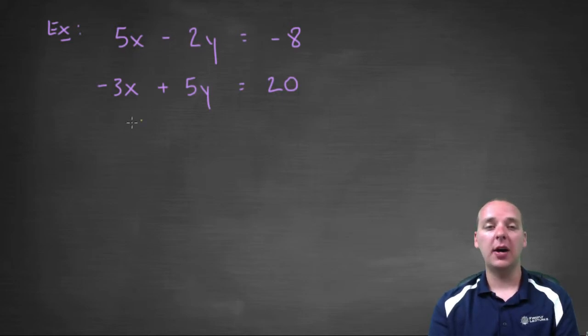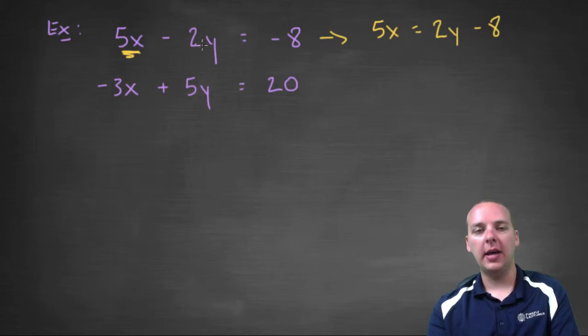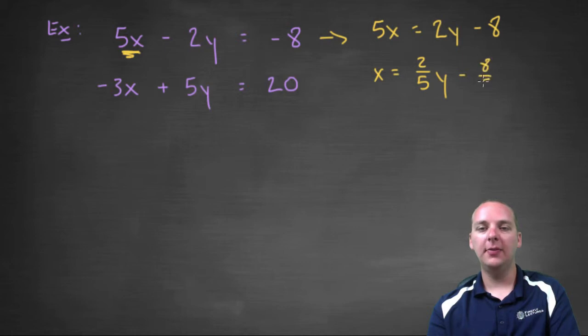Pick anybody—x, y, x, y, it doesn't matter. I guess I'll just pick this first guy right here. Solving for that x, we'd have 5x = 2y - 8 if we add 2y to the right. Divide both sides by 5, you'll get x = 2/5 y - 8/5. Yes I know we have fractions, yes I know that's ugly, not really much we can do about that.